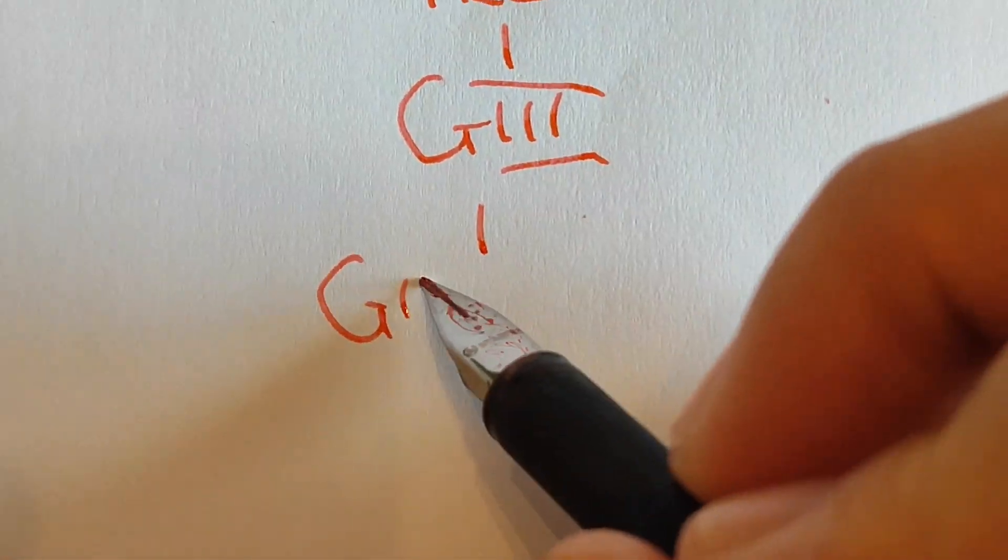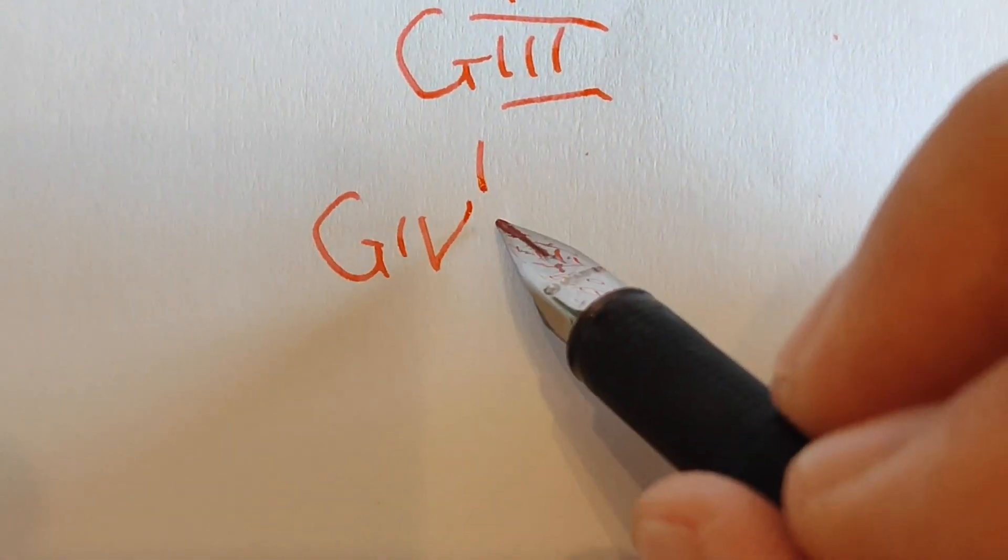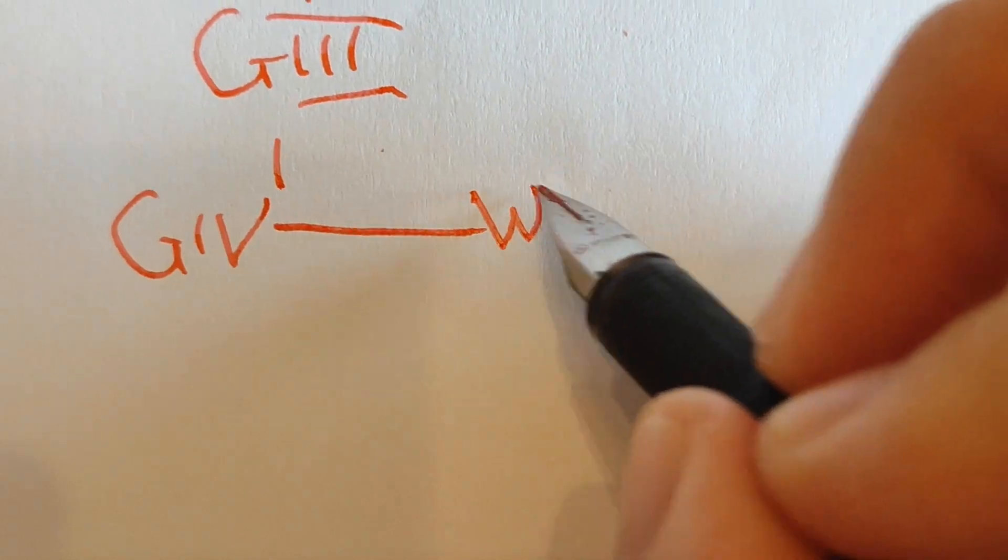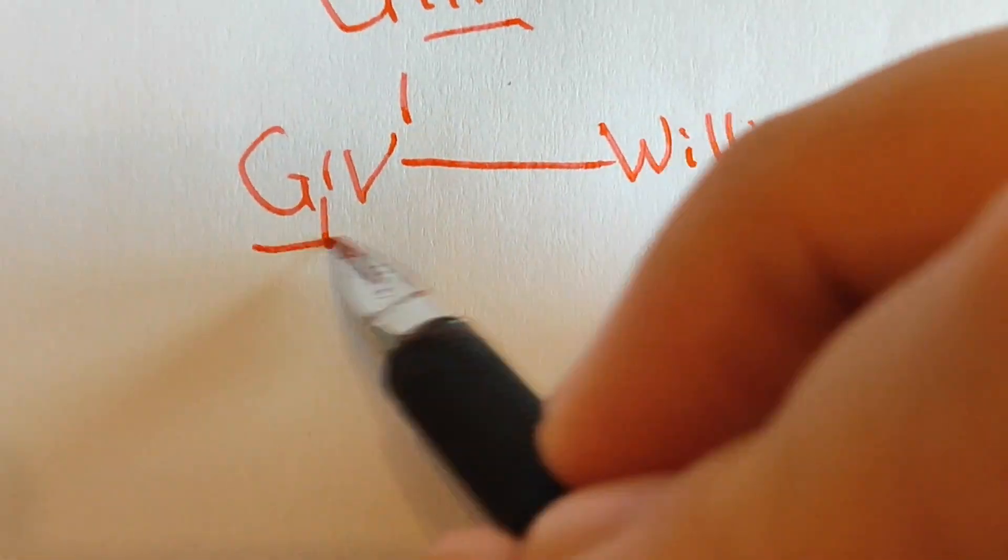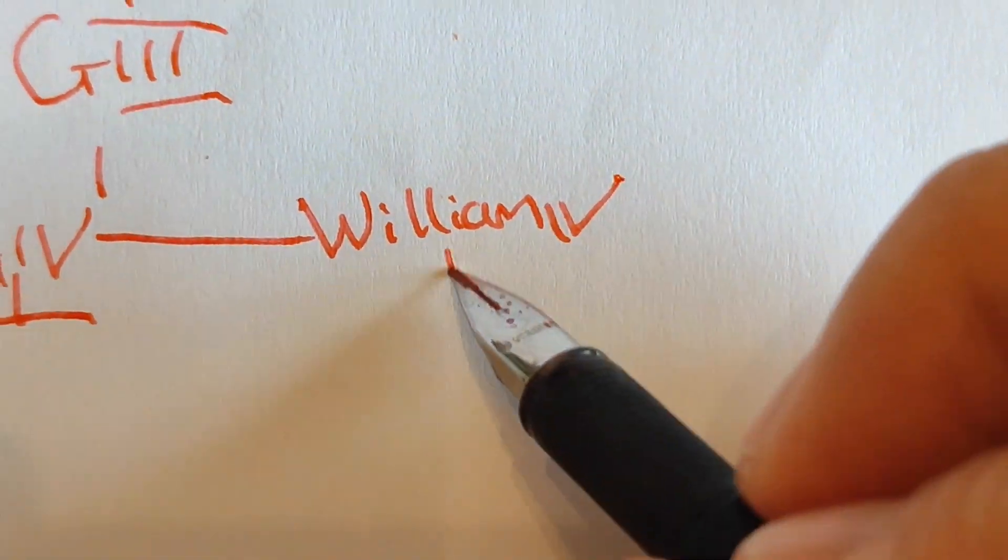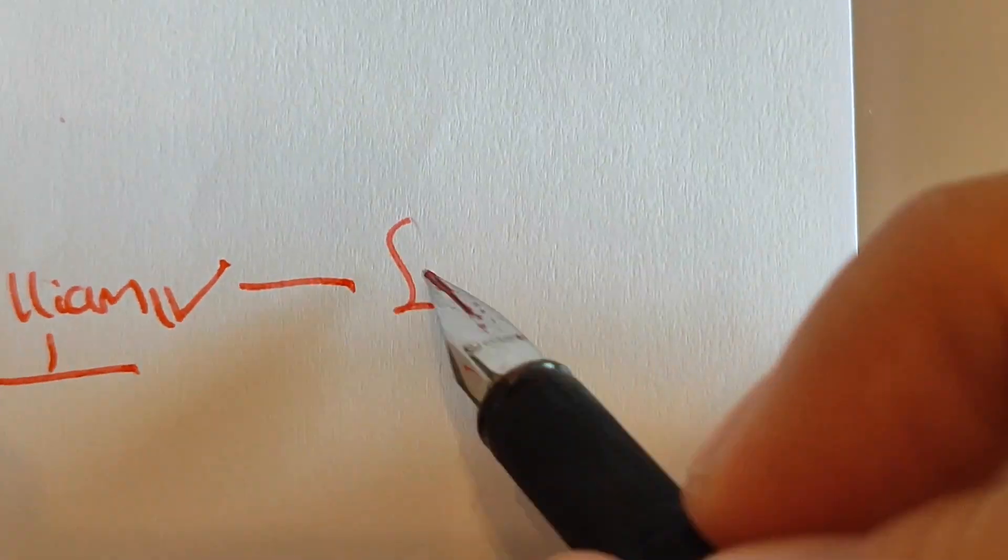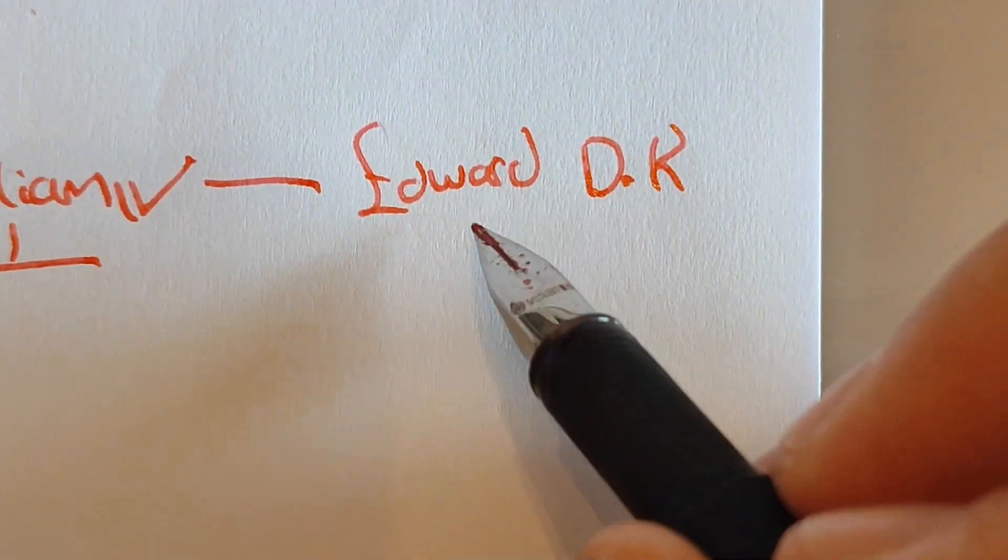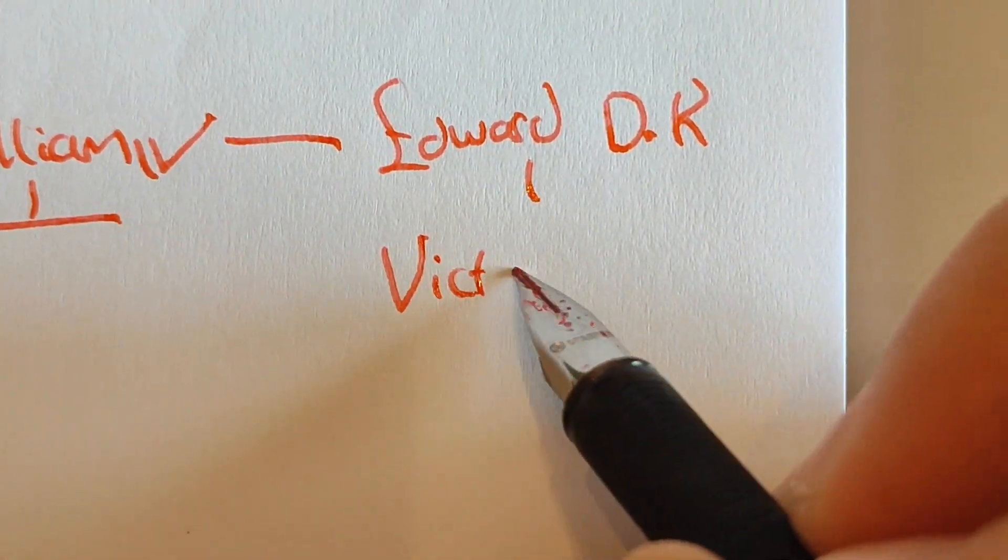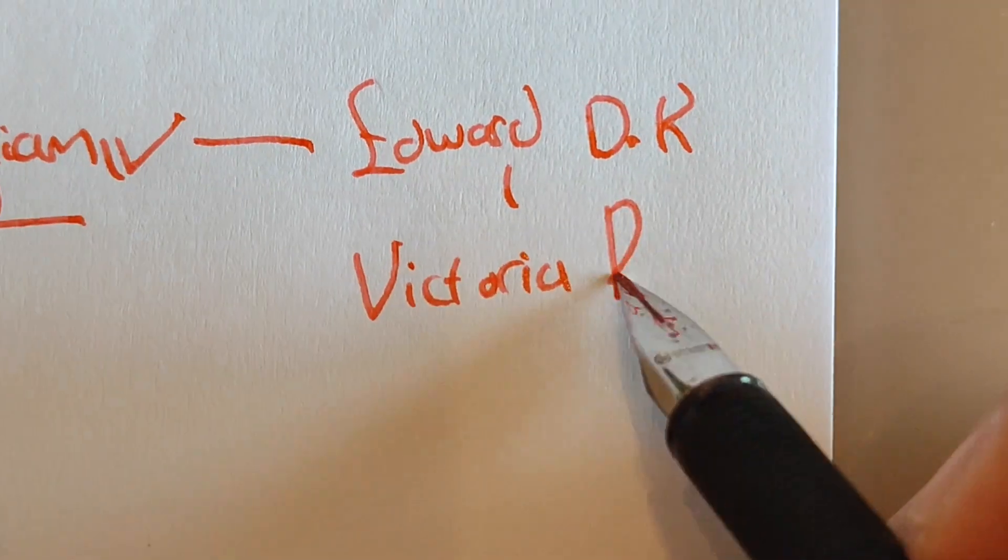And then, of course, we have George IV. But he, George IV, died airless. So we have to go to his brother, William, who became William IV, who died airless. But that was okay, because they had another brother, a person called Edward, the Duke of Kent, who had a daughter called Victoria, who became Queen of England, Queen Victoria.